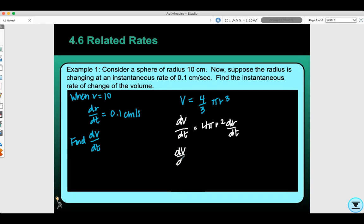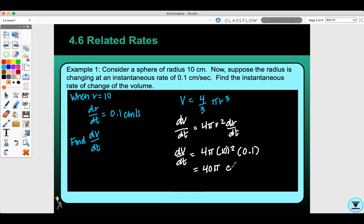So dV/dt, the rate of change of the volume with respect to time, equals 4π times 10 squared times 0.1. This would be 10 squared, a tenth of that is 10, 10 times 4 is 40, so 40π centimeters cubed per second is the answer.